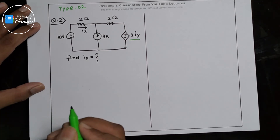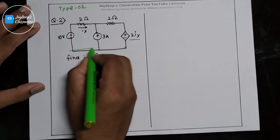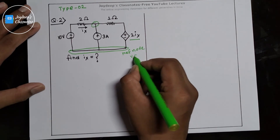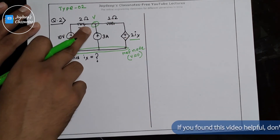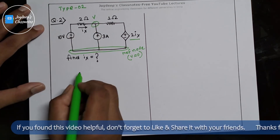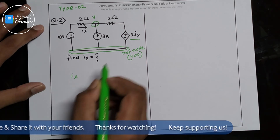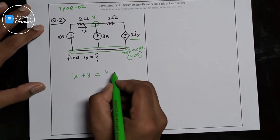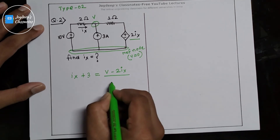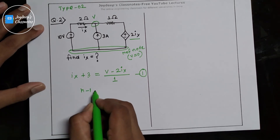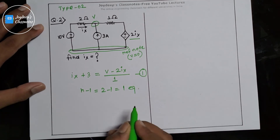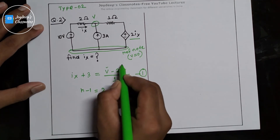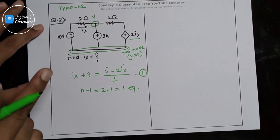Applying nodal analysis: step one — identify all the nodes: node 1, node 2, and the reference node. Assign V equals zero to the reference node and assign V to node 1. Writing the nodal equation: the incoming current Ix plus the incoming current 3 equals (V minus 2Ix) divided by 1. Since N minus one equals one equation, but we have two variables V and Ix, we can't find out two variables from a single equation.